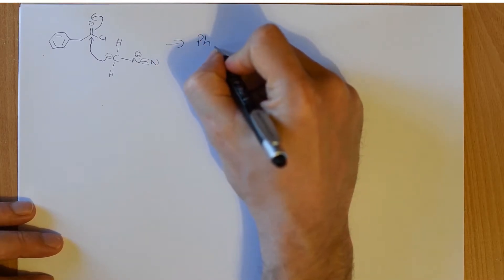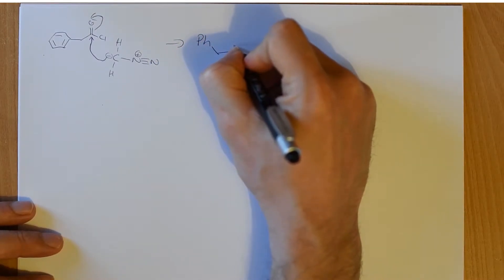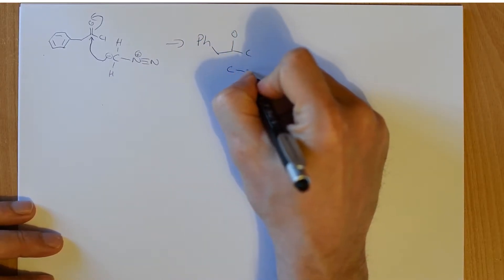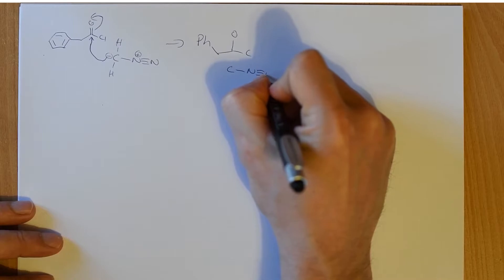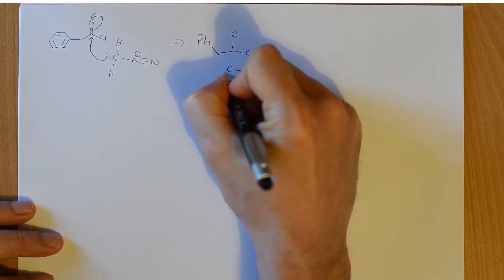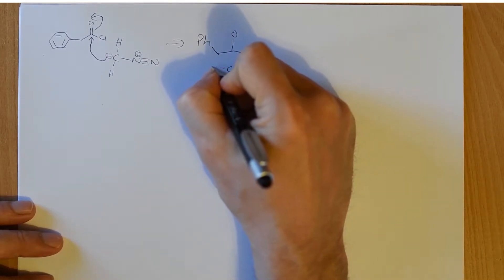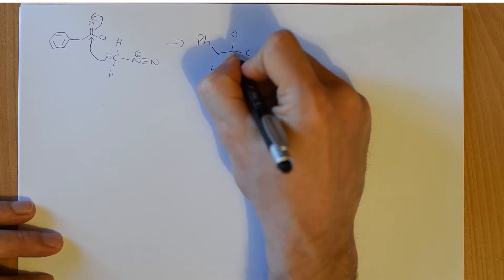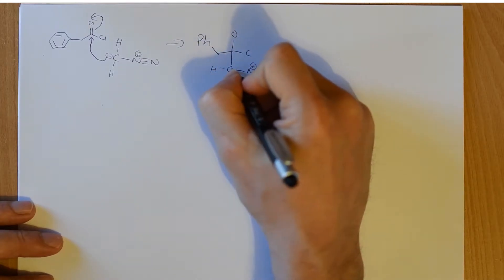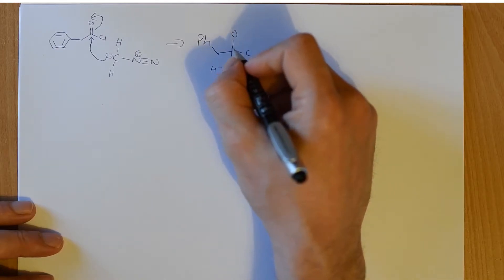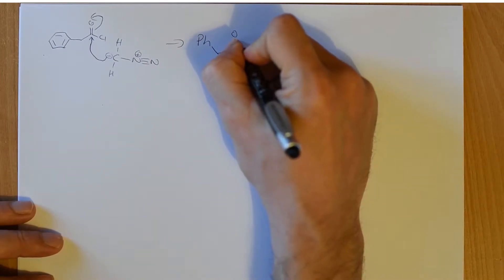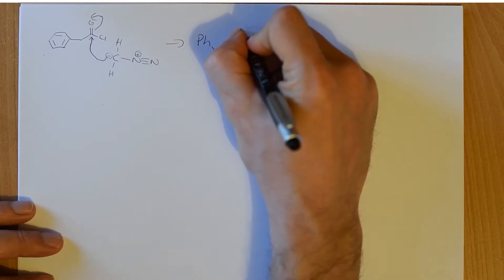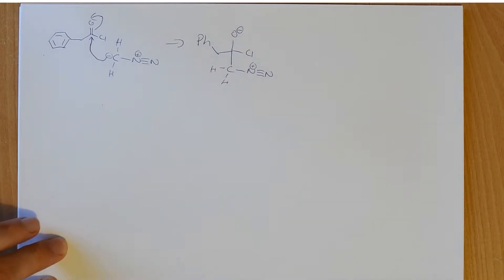So abbreviating the benzene ring to Ph, we're going to read all these things out. Everything exactly as it was, except what we've moved. Nitrogen with a positive charge. This carbon still has two hydrogens on it. We've made this bond, so the negative charge is gone from this carbon because it's now sharing that pair of electrons, and the chlorine is still there. And this second bond, we've put those two electrons up onto the oxygen.